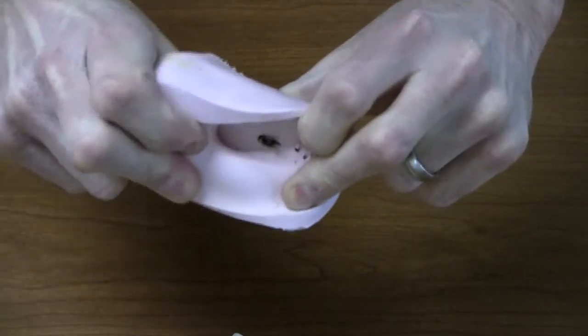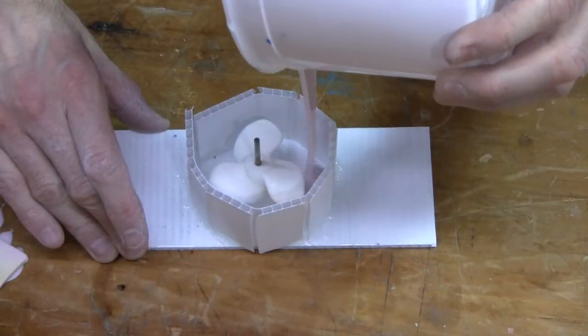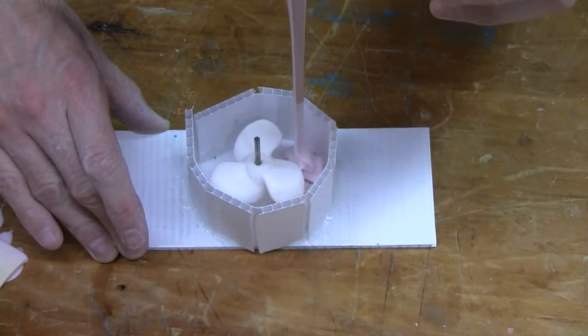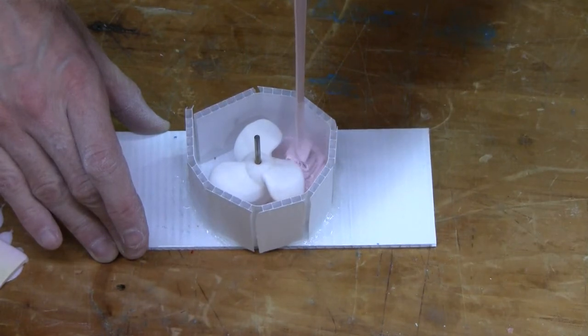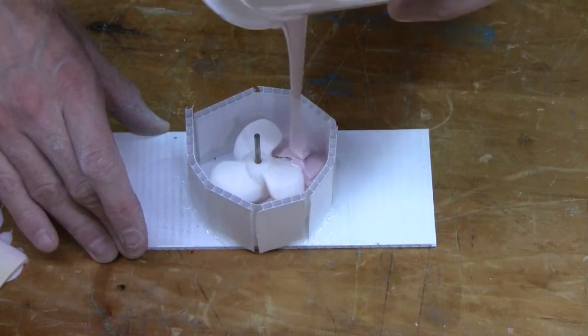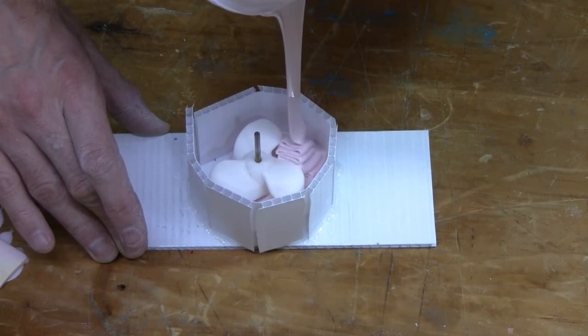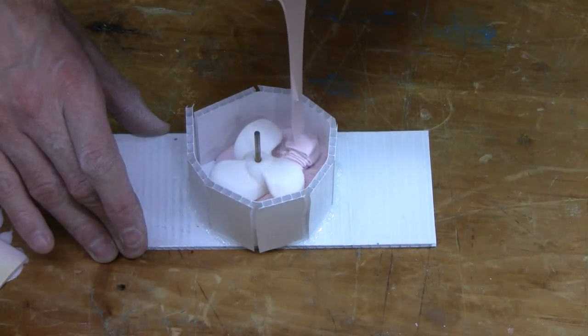Mix the material thoroughly until absolutely no swirls are seen, and then pour it into your sealed mold box over your original. This will make a high tear strength silicone rubber that produces the exact detail of your original.